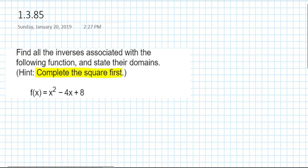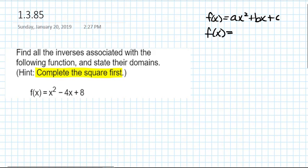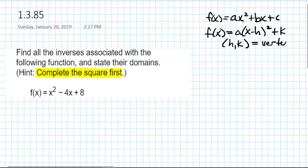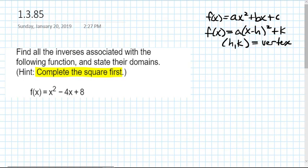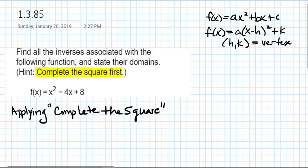A quadratic function can be given in standard form ax squared plus bx plus c, as it is here. But using completing the square, it can be rewritten into vertex form: a times x minus h squared plus k, where h and k are the vertex of the function. We don't need to factor out a coefficient of x squared since we don't have one.